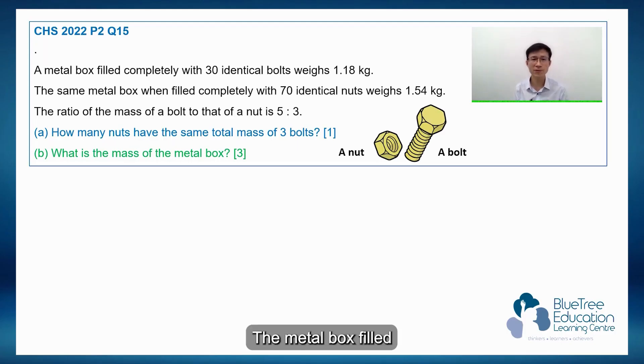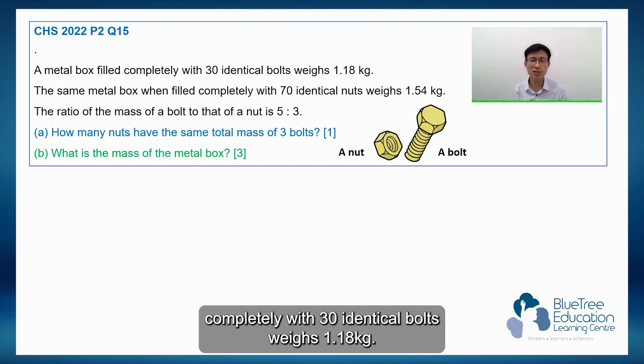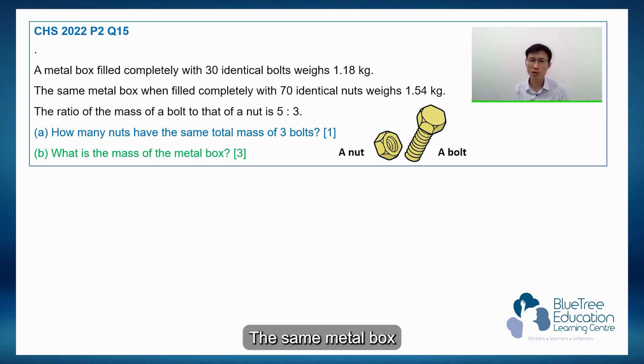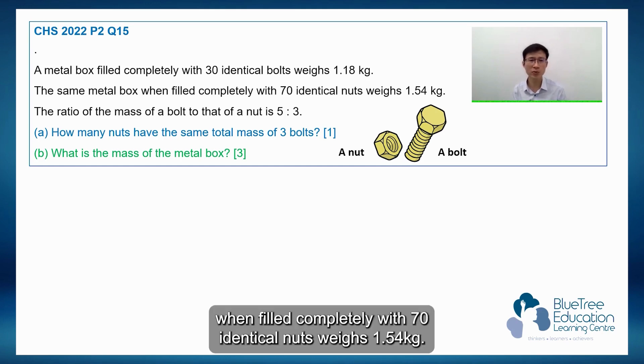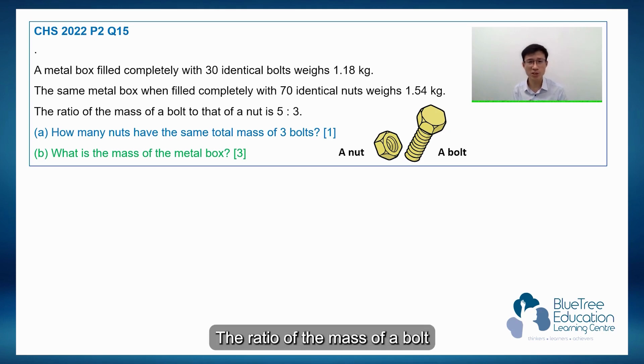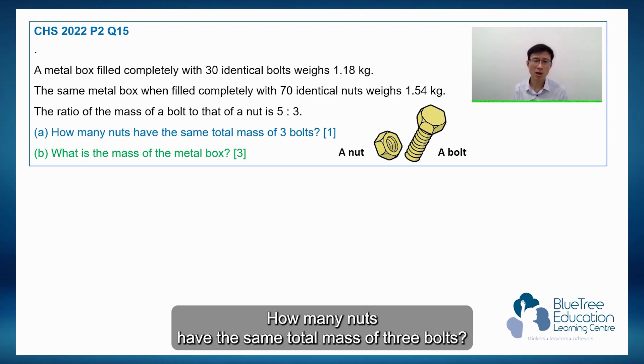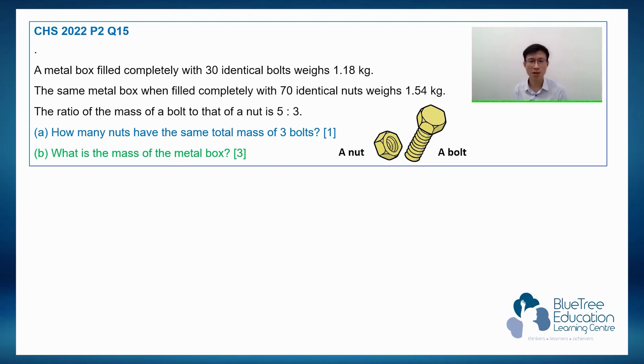A metal box filled completely with 30 identical bolts weighs 1.18 kg. The same metal box when filled completely with 70 identical nuts weighs 1.54 kg. The ratio of the mass of a bolt to that of a nut is 5 to 3. Now how many nuts have the same total mass of 3 bolts? And what is the mass of the metal box?